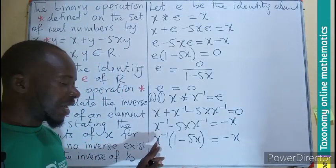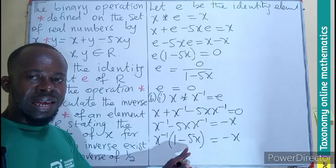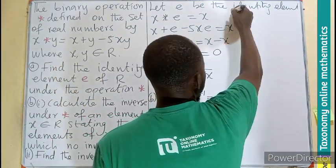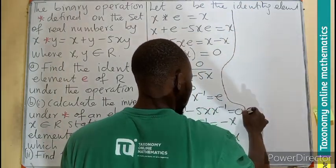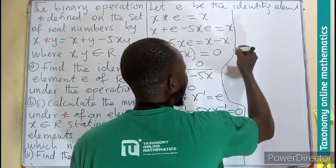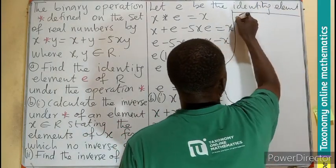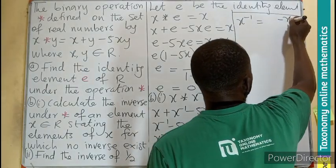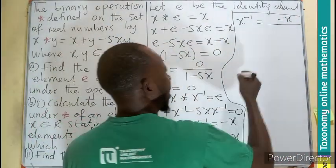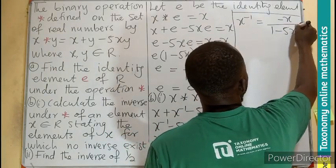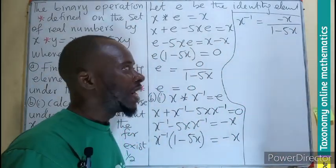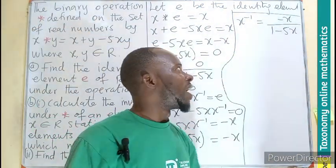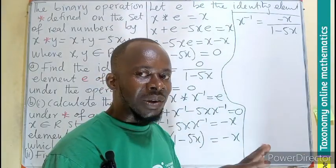We are looking for this, so let's factorize it out. The inverse becomes 1 minus 5x equals negative x. So as usual, we need the inverse, so we divide by the excess baggage. So the inverse equals negative x divided by 1 minus 5x. That is our answer.